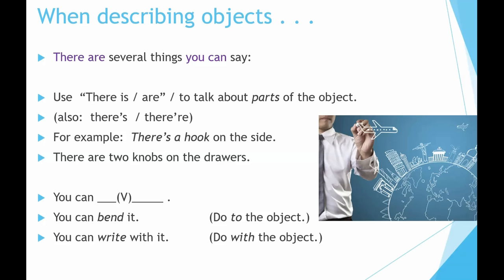'You can verb.' For example, 'you can bend it' — that's when you're talking about something you do to the object. 'You can write with it' — that's something that you do with the object.